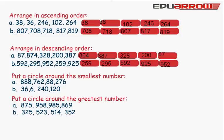Put a circle around the smallest number: 888, 762, 88, 276. We can see 88 is the smallest number.